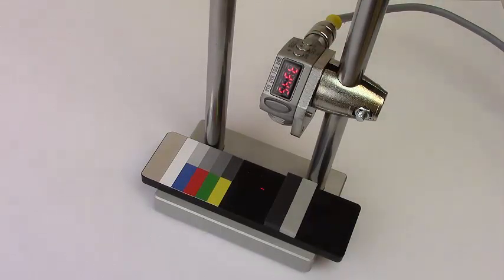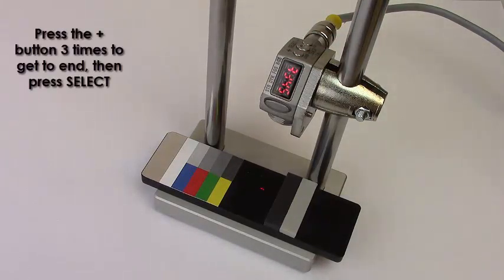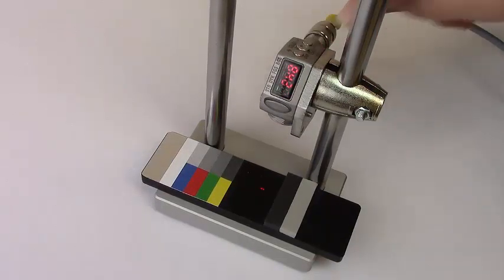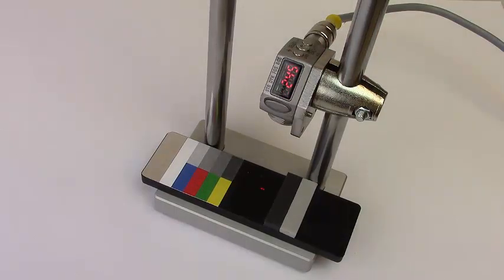Press the plus button three times to get to end, then press select. After switching the zero reference point, the distance from the target to the sensor is now 245 millimeters, which is 300 minus the previous measured distance of 55 millimeters.